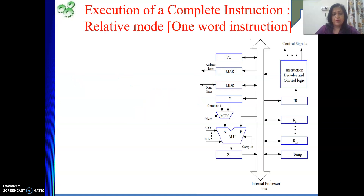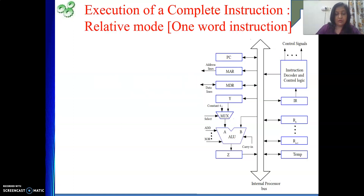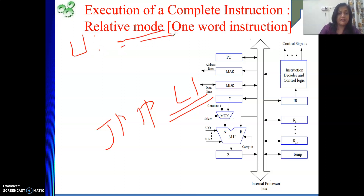So, recall the concept of relative mode. Suppose we write JMP L1. This L1 will take me to some instruction whose label is L1. As part of execution of this instruction, what we used to do is give PC the address of the target instruction.